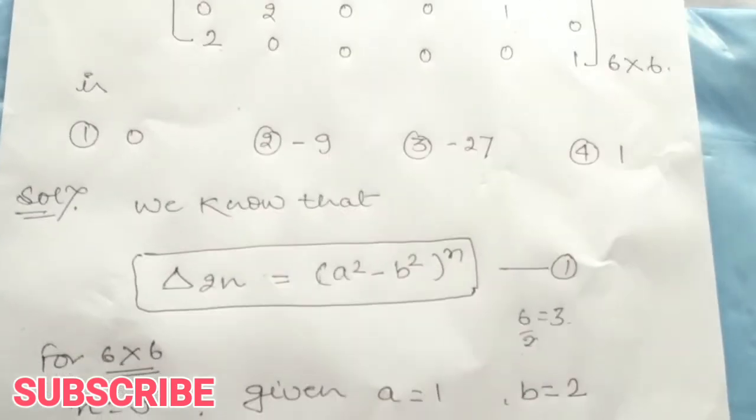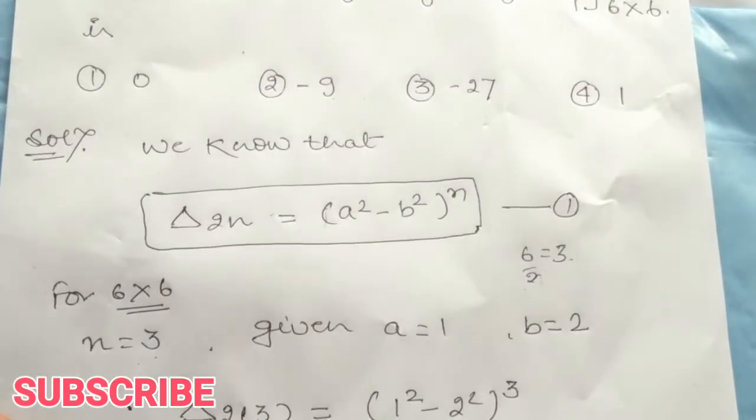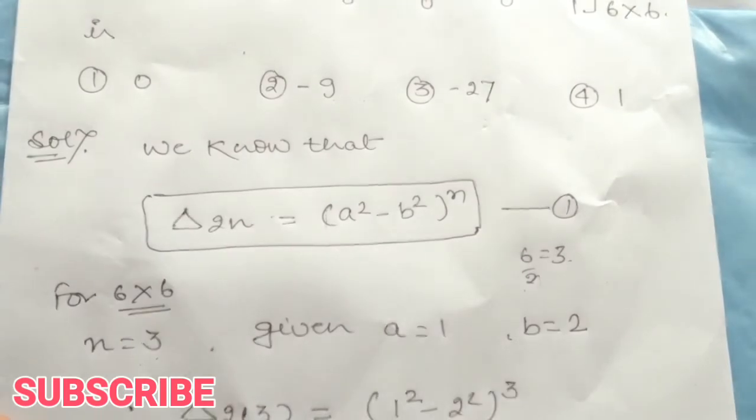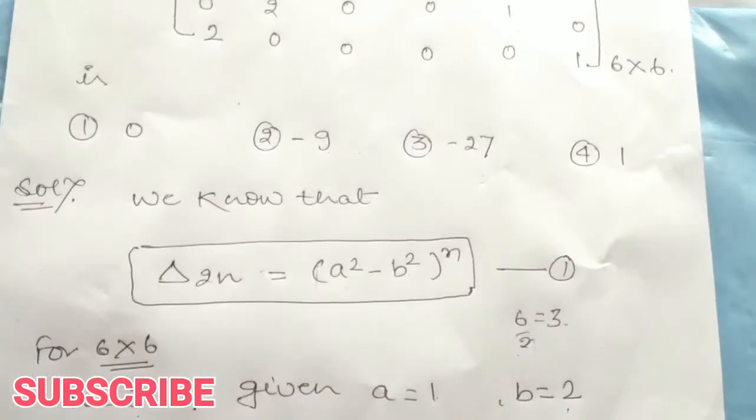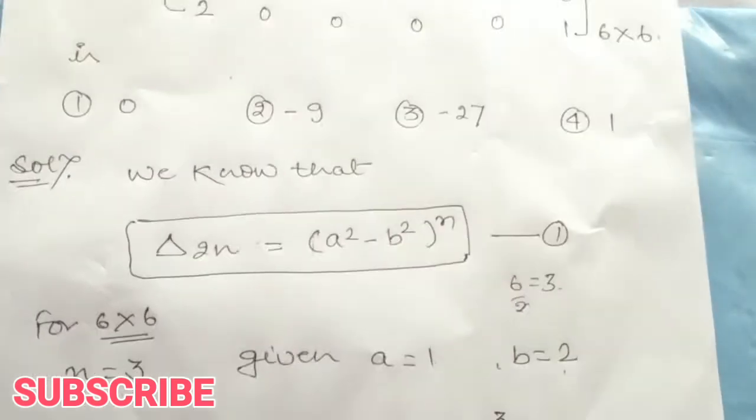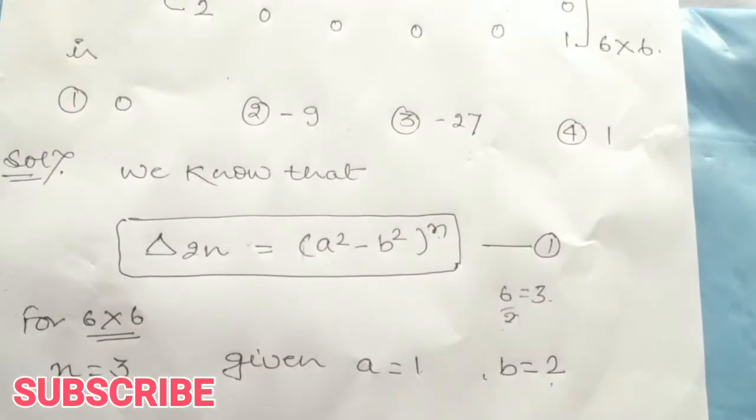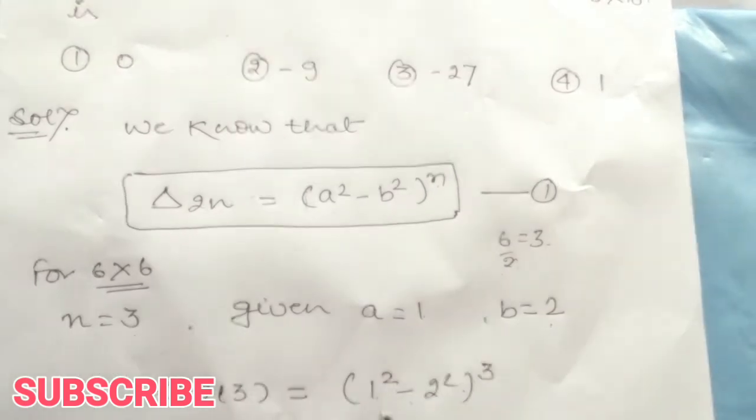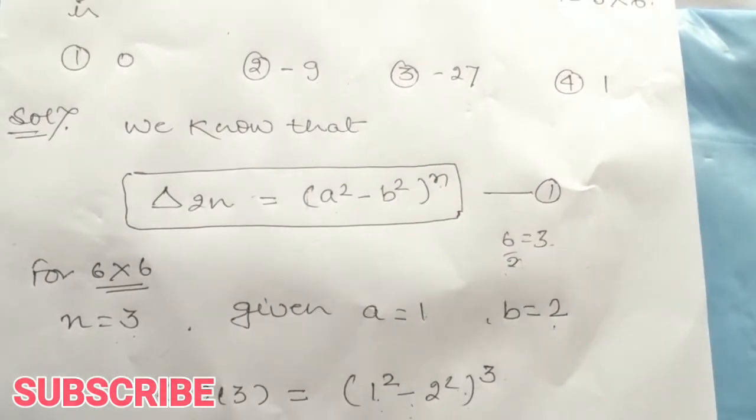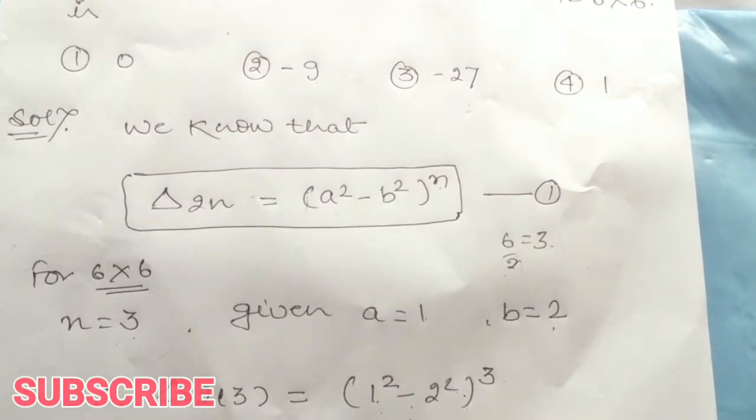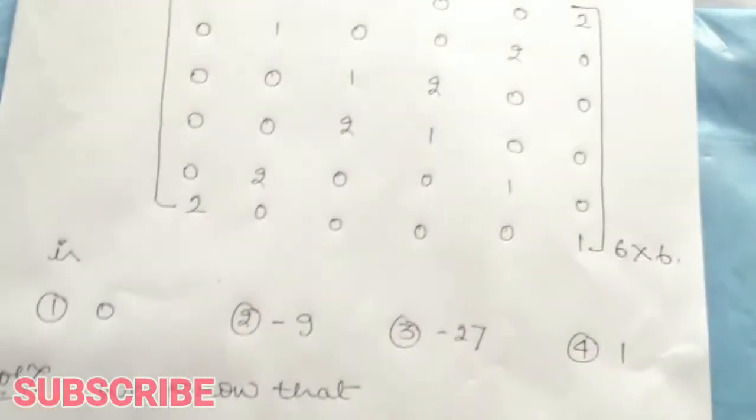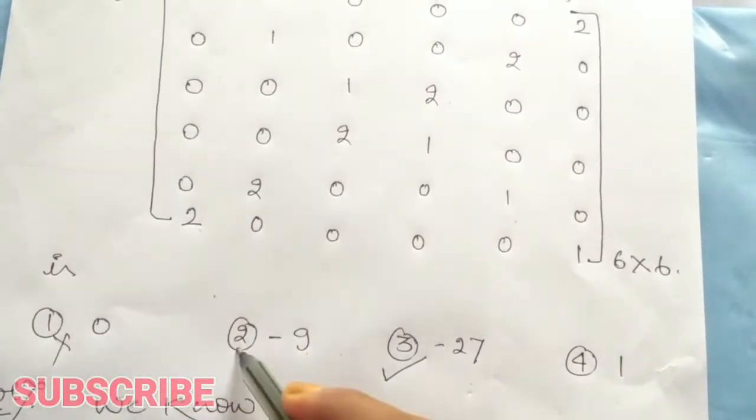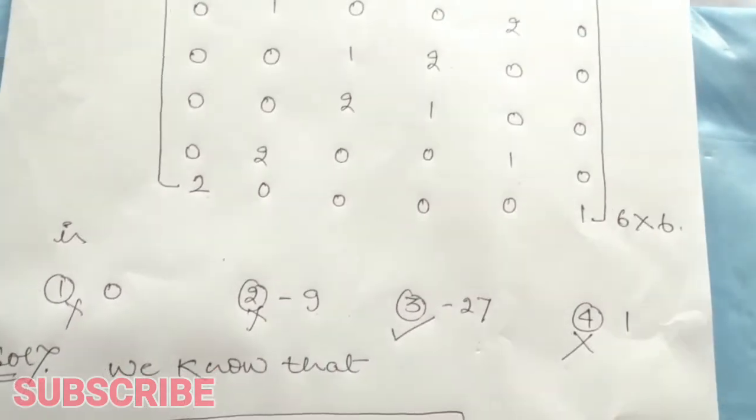We put this in the formula: a squared minus b squared to the power n, or 1 squared minus 2 squared to the power 3. When we solve this, minus 3 cubed gives us minus 27, which is the correct answer. The third option is correct; the first, second, and fourth options are incorrect.